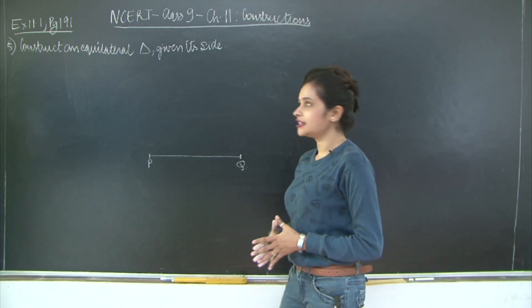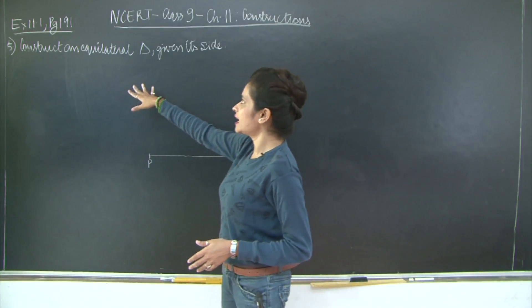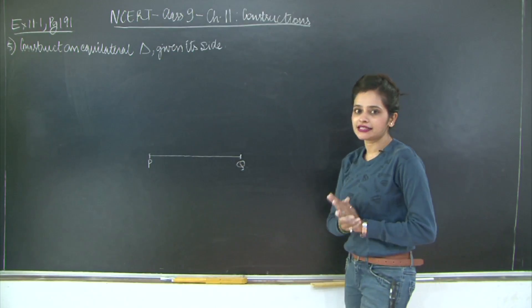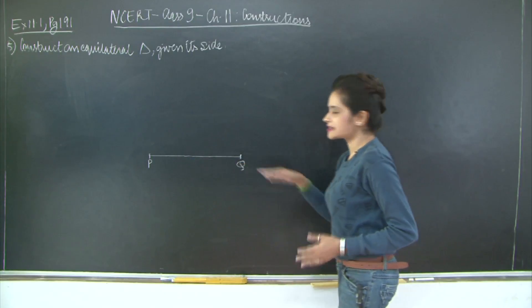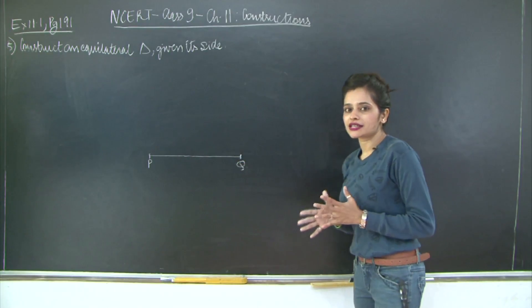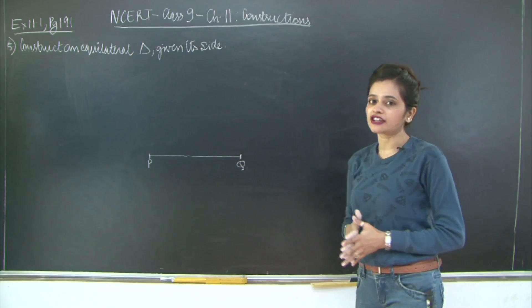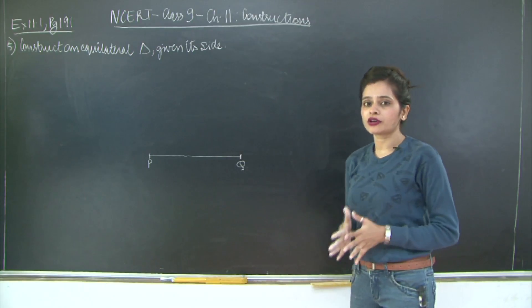So the question reads, the fifth one: construct an equilateral triangle given its side. So we've been given a side PQ, and just by using this side we need to draw an equilateral triangle.